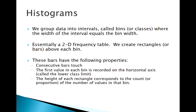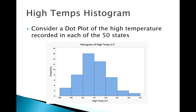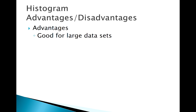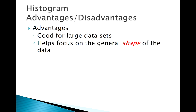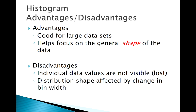Looking at a histogram of the high temperature data, it gives us a really good look at the shape of the distribution. Obviously we lose specific data points, but we get a great view of the overall shape. Histograms can handle any size dataset, and they give us a really good look at the shape. The disadvantages are that we lose individual values, and you can play around with your bin sizes to make a histogram look almost anything like you want, which can be misleading.